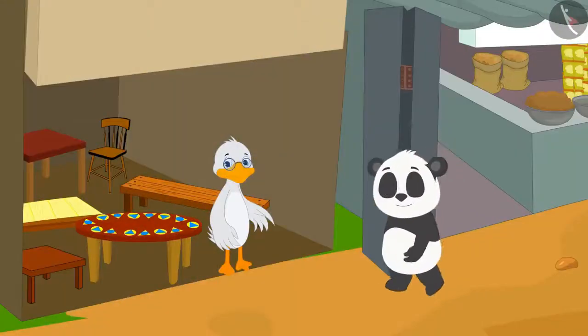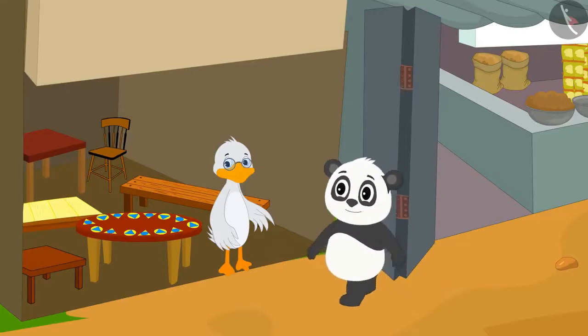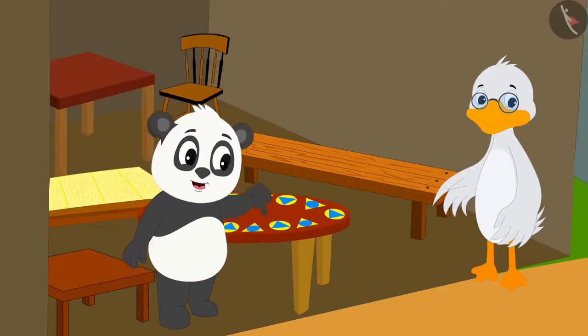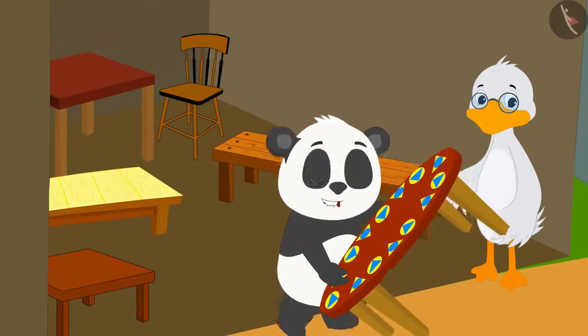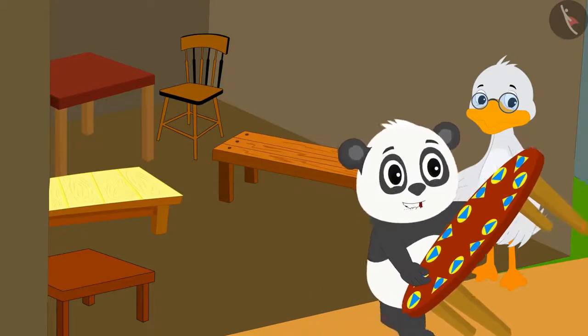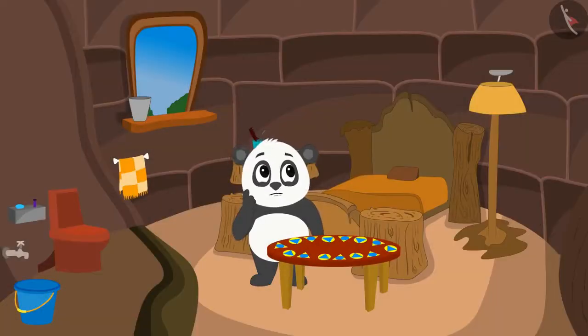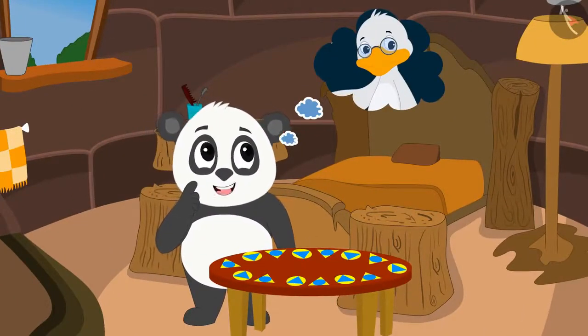Golu came to buy the table at uncle's shop and he liked the table very much. Golu immediately bought the table from uncle. Golu returns to his house thinking how did uncle make this pattern.